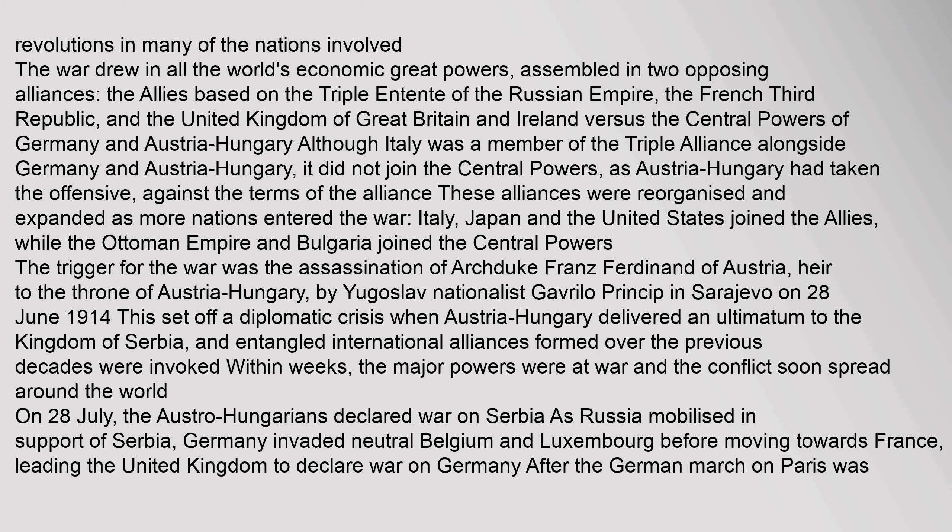The trigger for the war was the assassination of Archduke Franz Ferdinand of Austria, heir to the throne of Austria-Hungary, by Yugoslav nationalist Gavrilo Princip in Sarajevo on 28 June 1914. This set off a diplomatic crisis when Austria-Hungary delivered an ultimatum to the Kingdom of Serbia, and entangled international alliances formed over the previous decades were invoked. Within weeks, the major powers were at war and the conflict soon spread around the world.